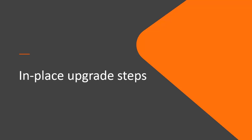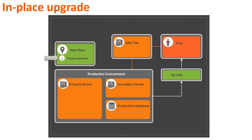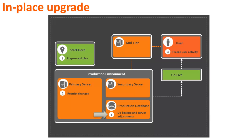In case you are planning to perform an in-place upgrade of your BMC Remedy ITSM suite, you must first complete all the preparation tasks. In the second stage, suspend all administrative operations on the primary server and do not create or modify any objects until the upgrade is complete. In the third stage, put your production URL under maintenance mode and freeze the user activity. In the fourth stage, perform a backup of the database in the production environment. After the backup is complete, perform the source server related adjustments.